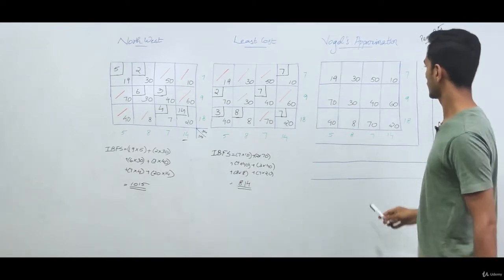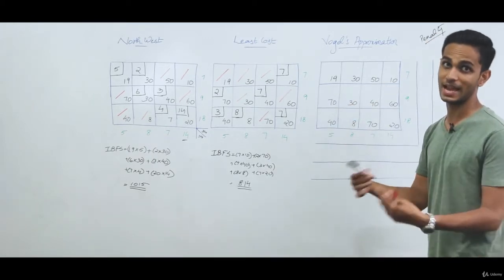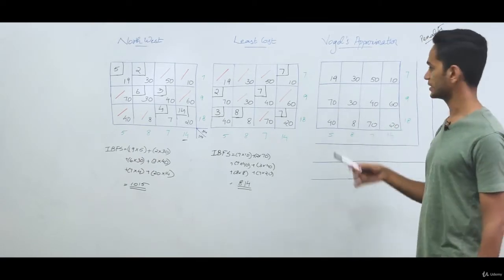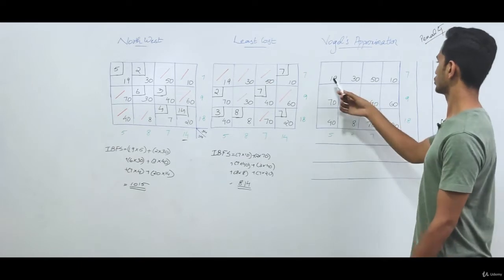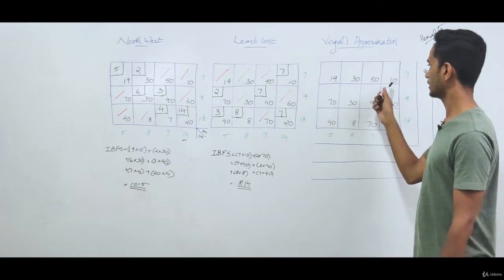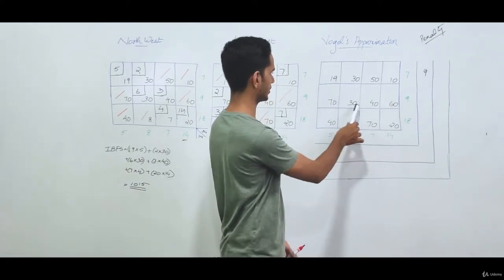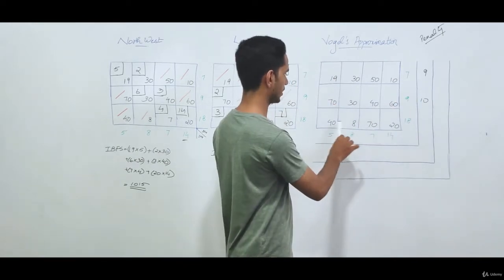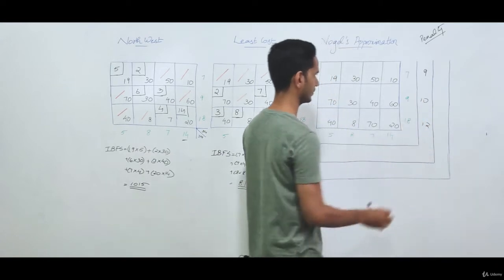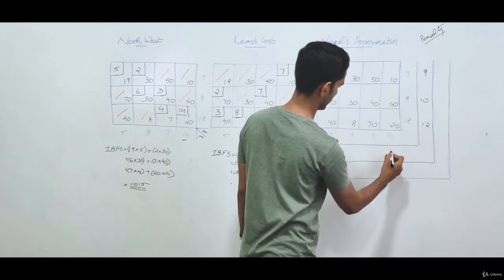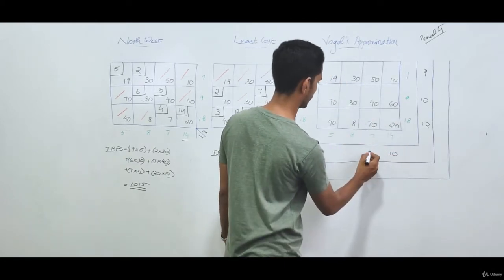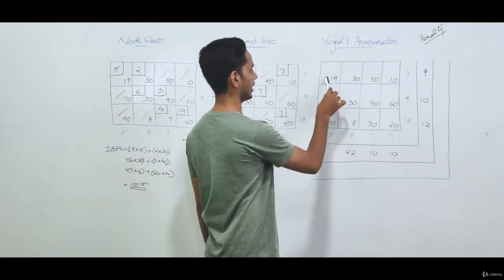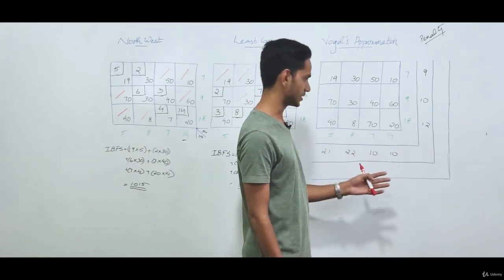To find the penalty, we take the difference between the least cost element and the second least cost element for each row and each column. For row 1: least is 10, second least is 19, penalty is 9. For row 2: least is 30, second least is 40, penalty is 10. For row 3: least is 8, second least is 20, penalty is 12. Column penalties: 10 and 20 → 10; 40 and 50 → 10; 8 and 30 → 22; 40 and 19 → 21.